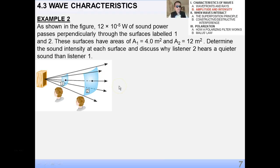All right. Try this example on your own. Example 2 deals with sound. So, we have 12 times 10 to the -5 watts of sound power passing perpendicularly through two surfaces. So, two people at different distances from the speaker. These surfaces have different areas. Determine the sound intensity at each surface and discuss why listener 2 hears a quieter sound.